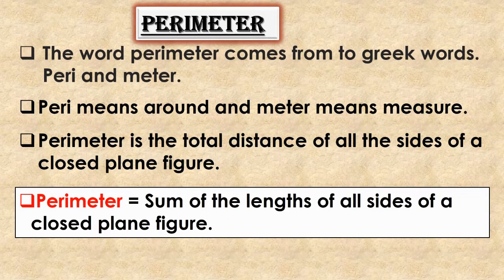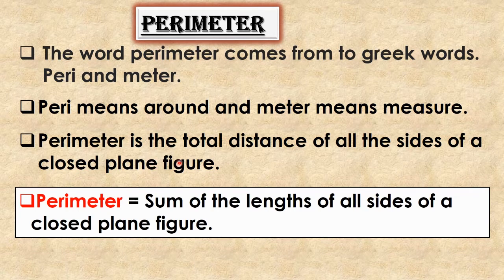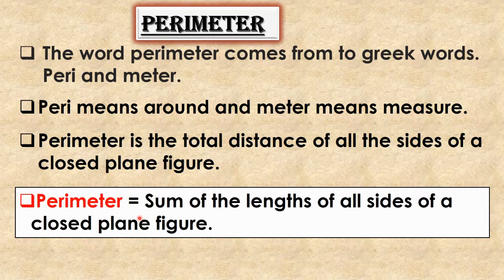The word perimeter comes from two Greek words: peri and meter. Peri means around and meter means measure. Perimeter is the total distance of all the sides of a closed plane figure — that is, the sum of the lengths of all sides of a closed plane figure.